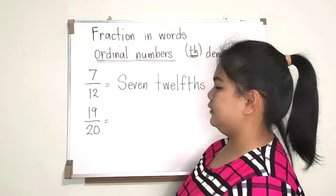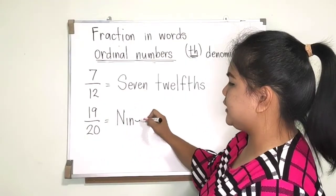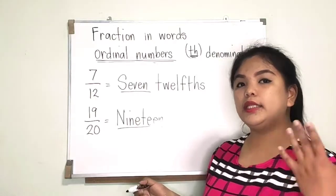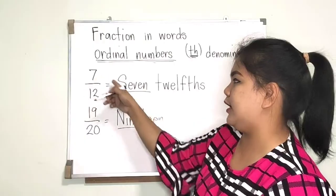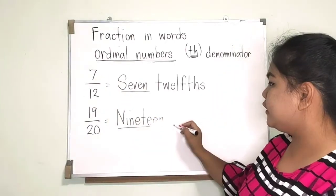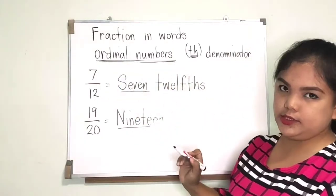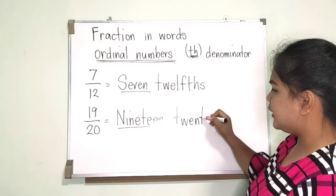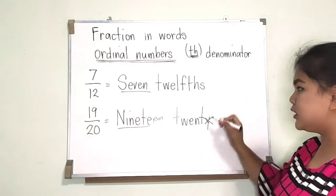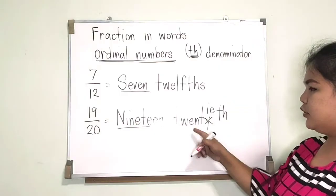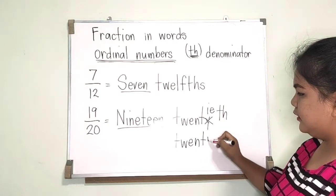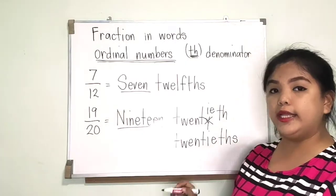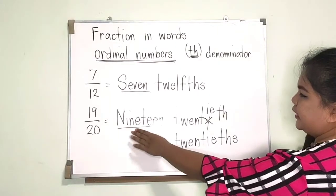How about 19/20? Always remember, the numerator is always written in regular number words — like 'nineteen.' But the denominator, you must make it into an ordinal number. For 20, you change Y to IE and add TH, so it becomes 'twentieth.' And we write THS with S because nineteen is more than one. So 19/20 is read as 'nineteen twentieths.'